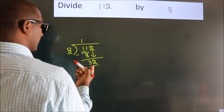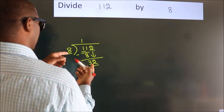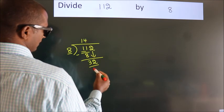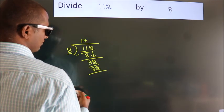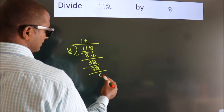When do we get 32 in the 8 table? 8 fours, 32. Now we subtract, we get 0.